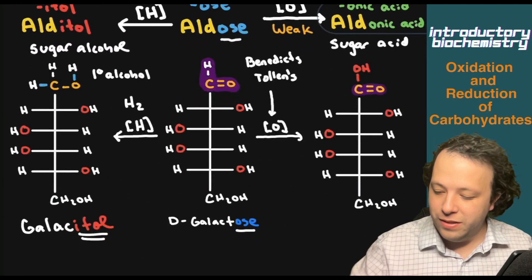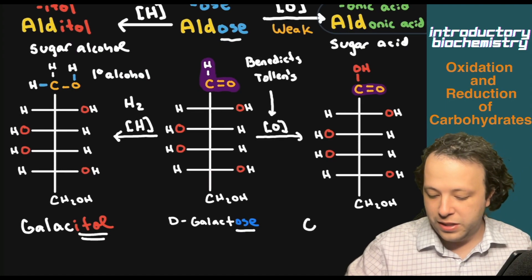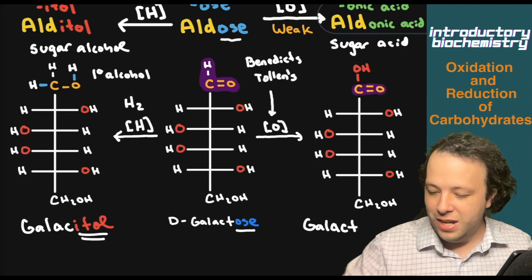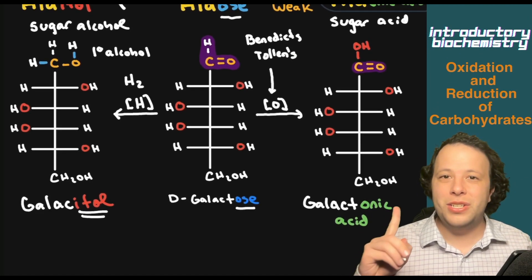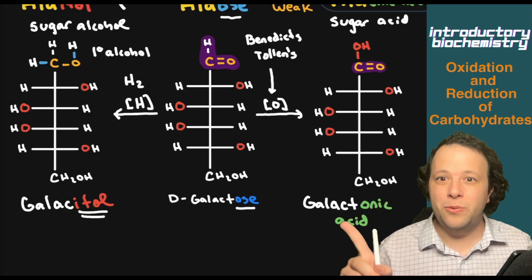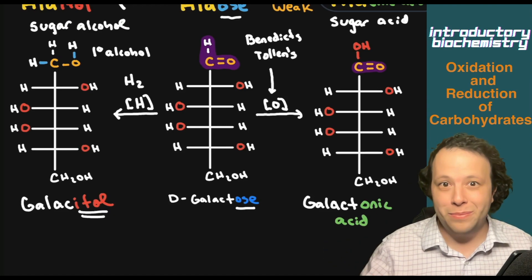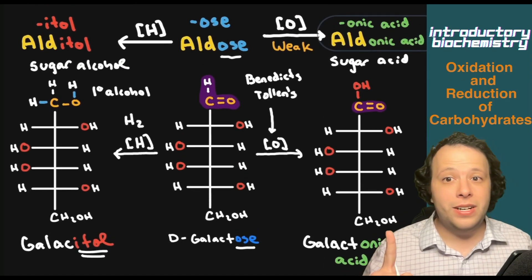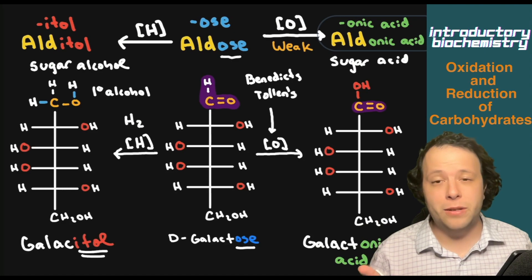Before it was galactose, so we're going to keep the galact part and then change the ending to galactonic acid as the name. We have our sugar acid and on the far left we have the sugar alcohol, and in the middle we have a regular simple sugar. That's the idea of oxidation reduction.